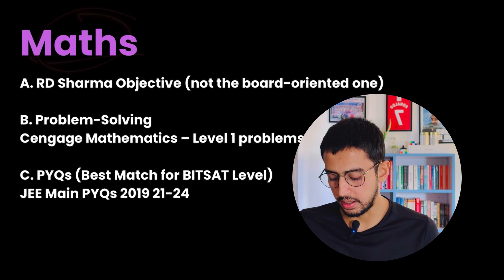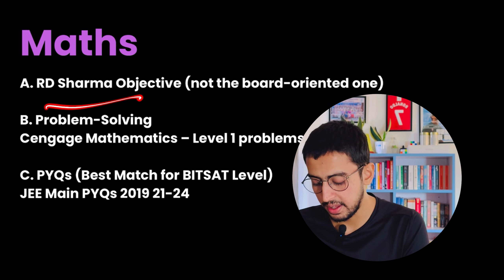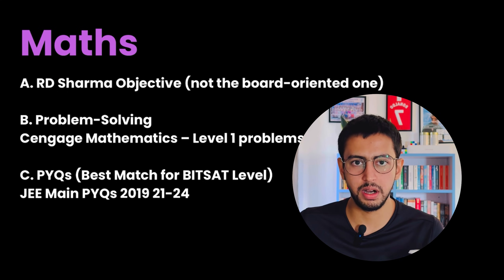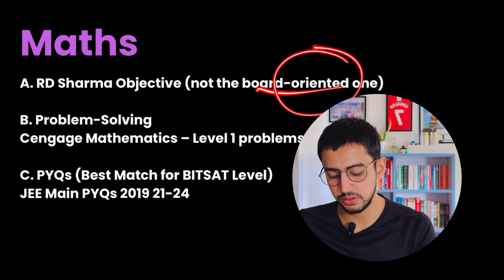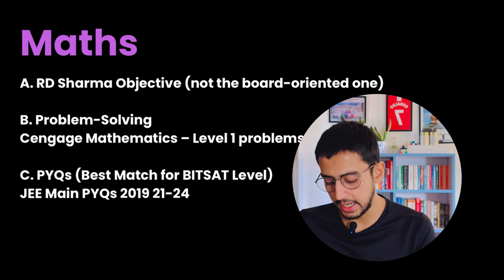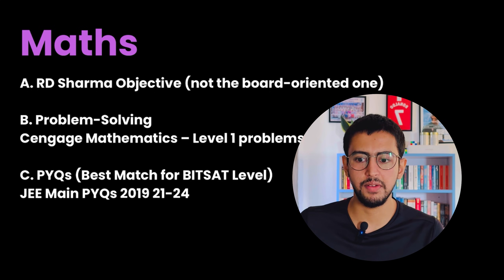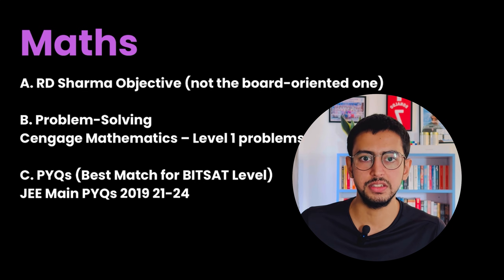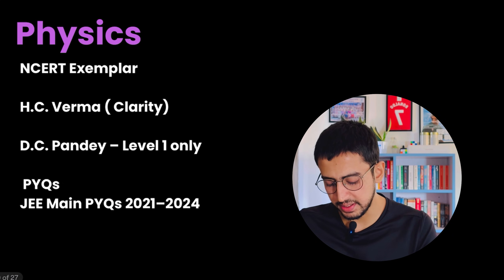For maths, you can choose either RD Sharma or Cengage — any one of them, as both are massive to complete. In RD Sharma, use the objective book, not the class 12 boards-oriented one. Apart from that, use 2021 to 2024 PYQs, and additionally the 2019 JEE maths PYQs, since 2019 had a lot of questions that were not lengthy in calculations — which is similar to the type of questions you find in Bitsat.